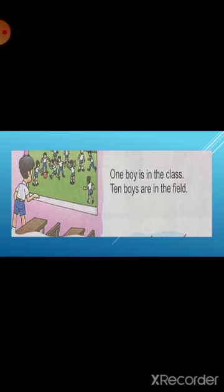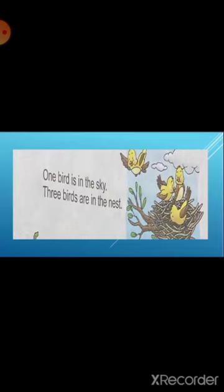Now come to the next paragraph. 'One bird is in the sky. Three birds are in the nest.' See children, one bird is flying in the sky and three birds are in the nest. When we will talk about one bird, then we will use 'is', and when we will talk about more than one bird, then we will use 'are'.